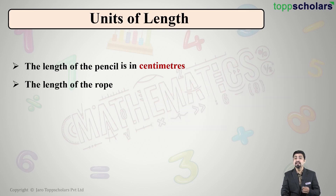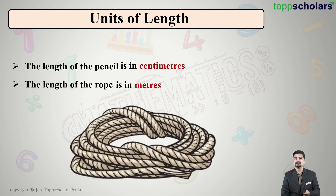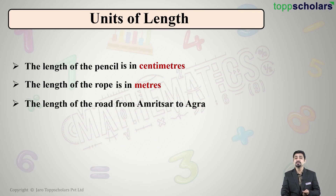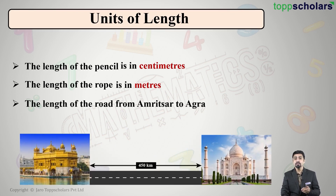Similarly, the length of a rope is generally measured in meters. We say we want a one-meter long rope or a two-meter long rope. Now, how do you measure the length of the road from Amritsar to Agra?